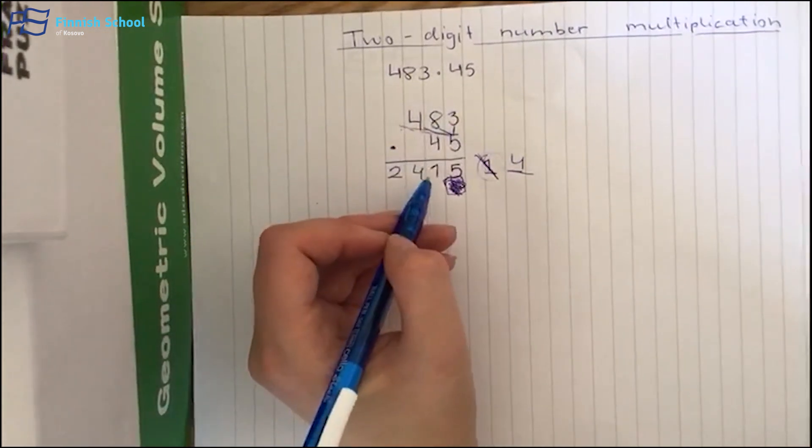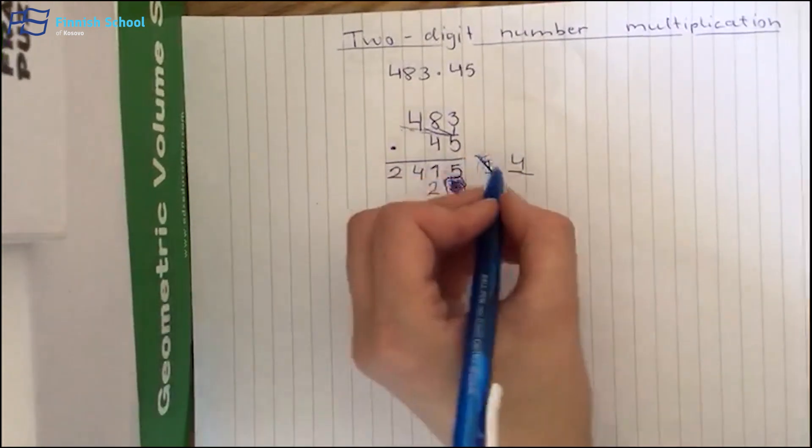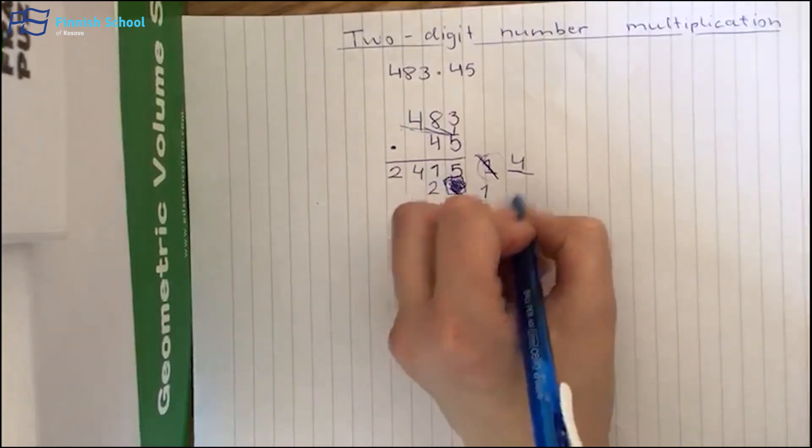4 times 3, it's 12. So number 2 from 12 you put here. Number 1 comes here. Number 1 comes as a reminder.